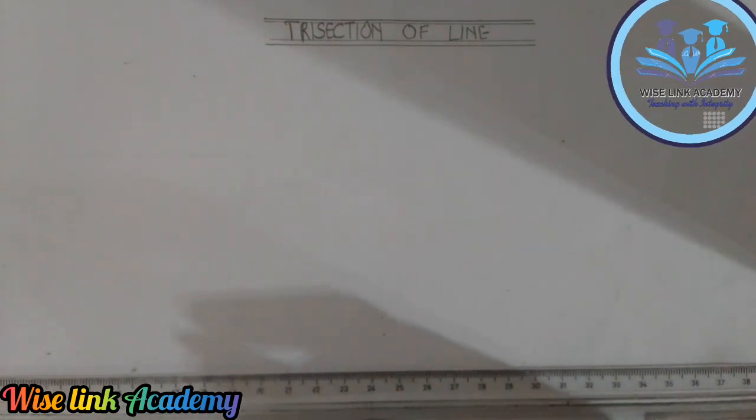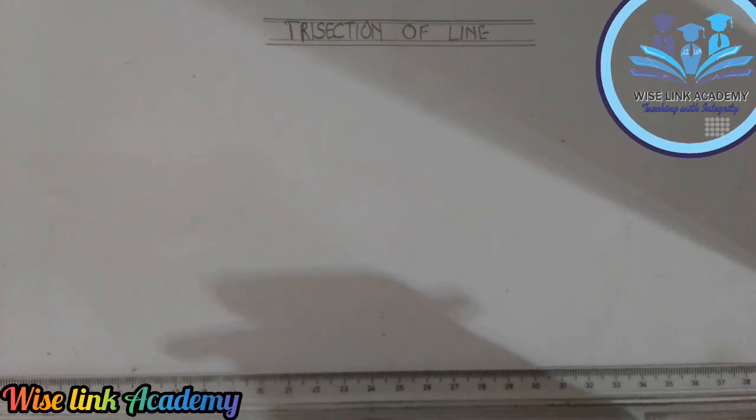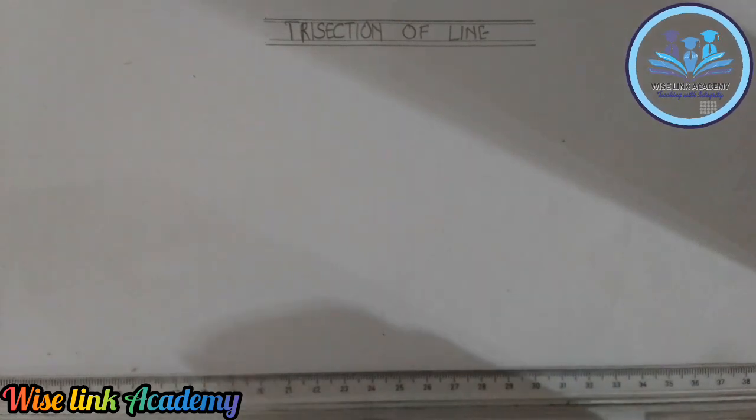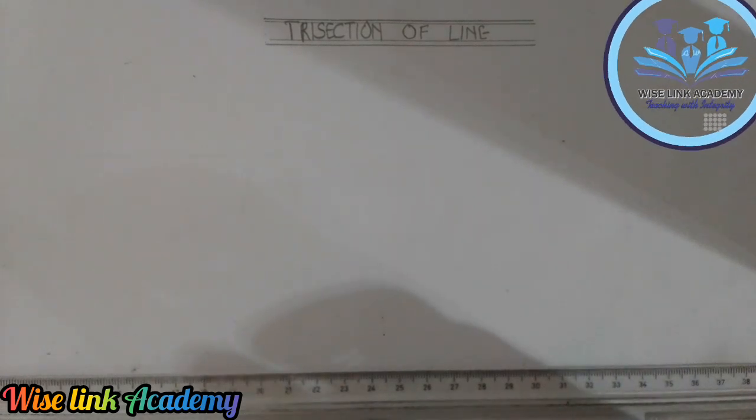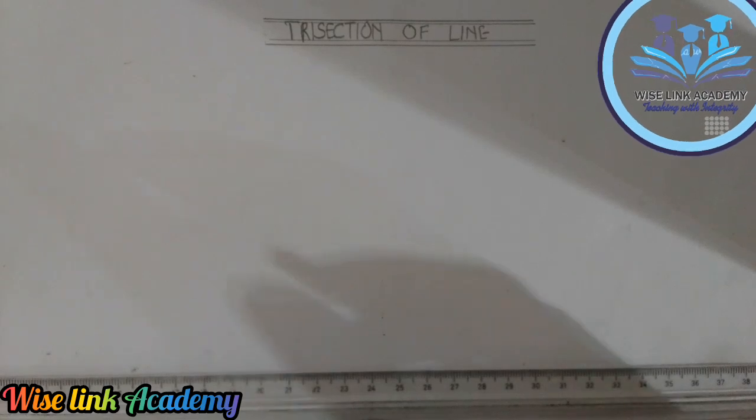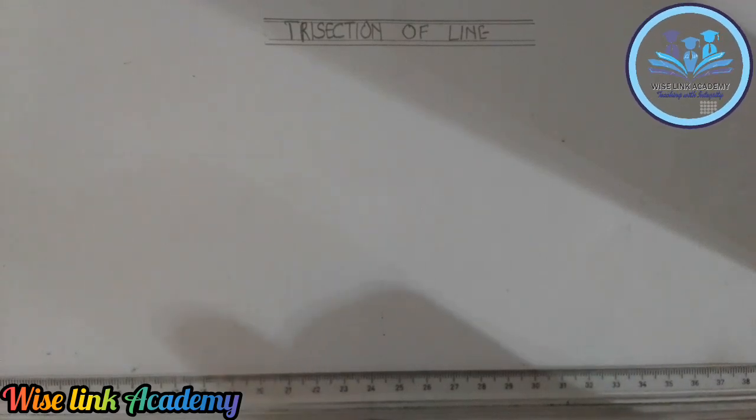Now how do I go about that? I want to divide a line of, let me just see, a line of 80 millimeters. Yes, let's say 80, 80 millimeters into three equal parts.